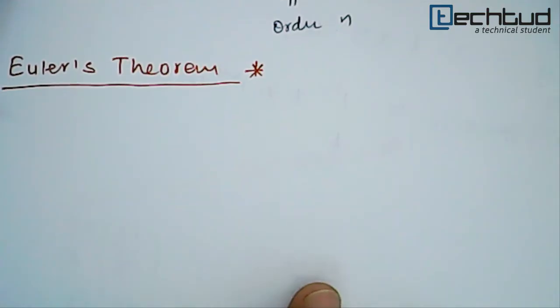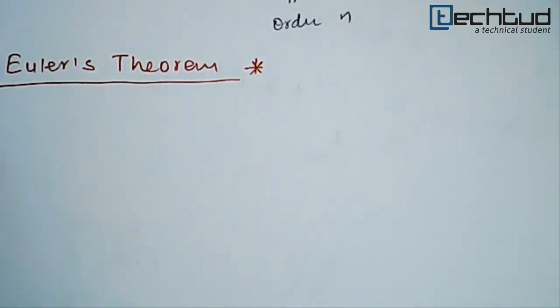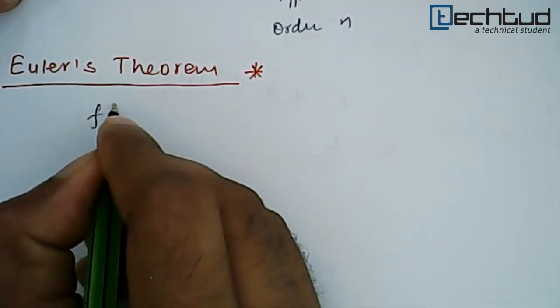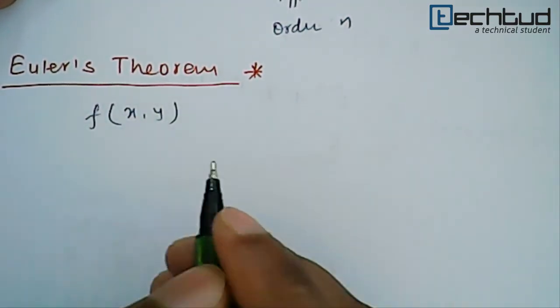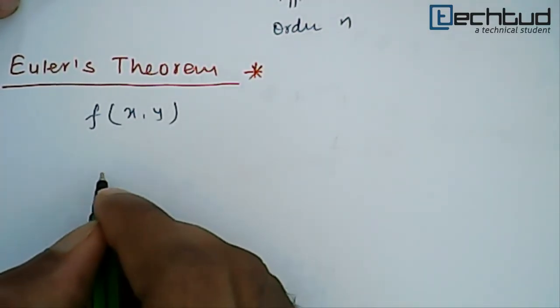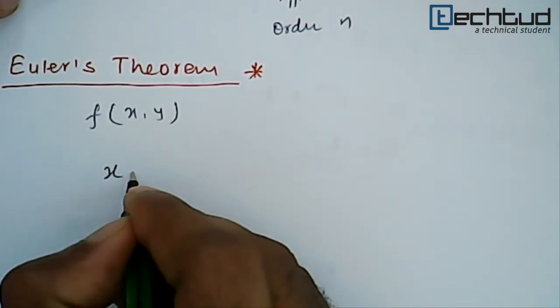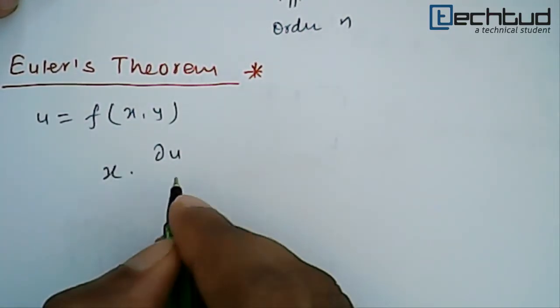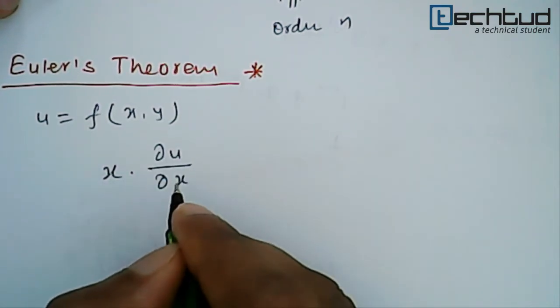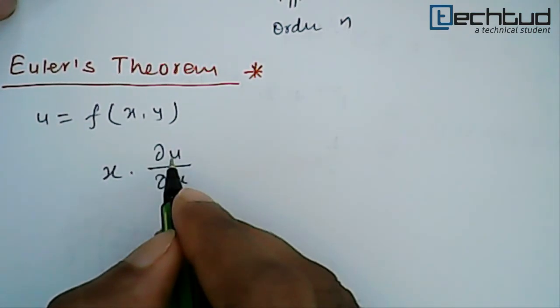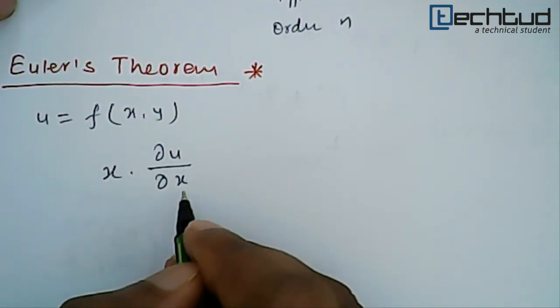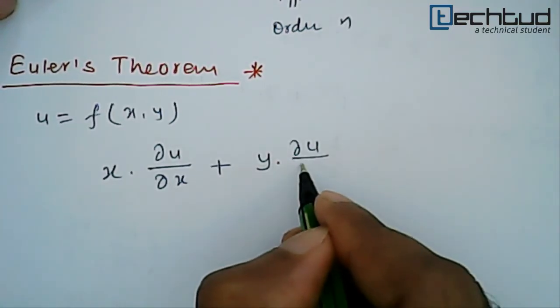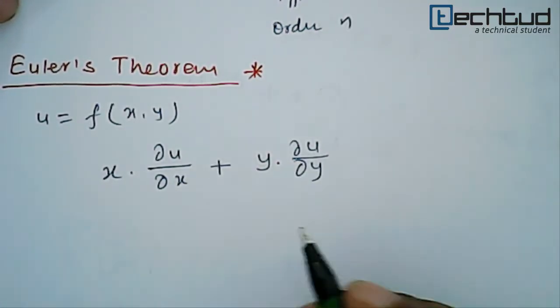What is Euler's theorem? Euler's theorem is very simple. It says for a homogeneous function f which is a function of x and y, if u equals f(x,y), then x(∂u/∂x) - when we differentiate u with partial differentiation with respect to x and multiply by x - plus y(∂u/∂y), partial differentiation with respect to y.